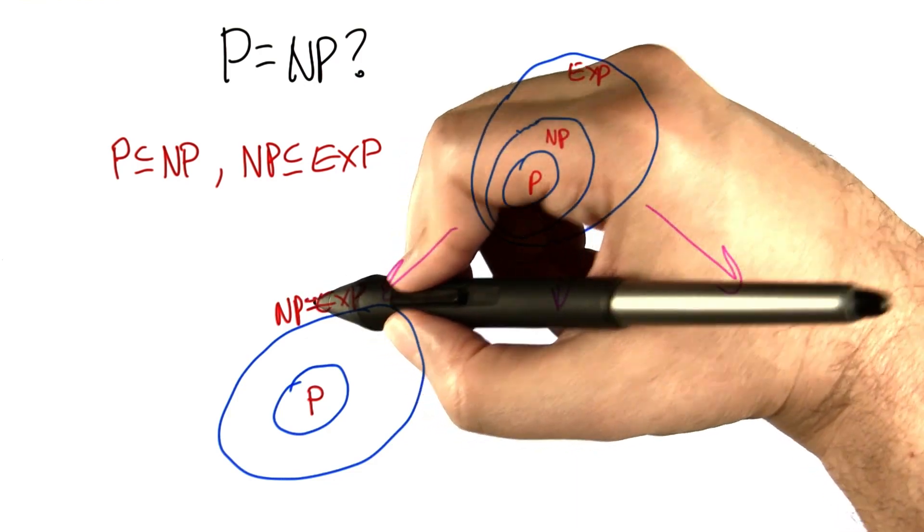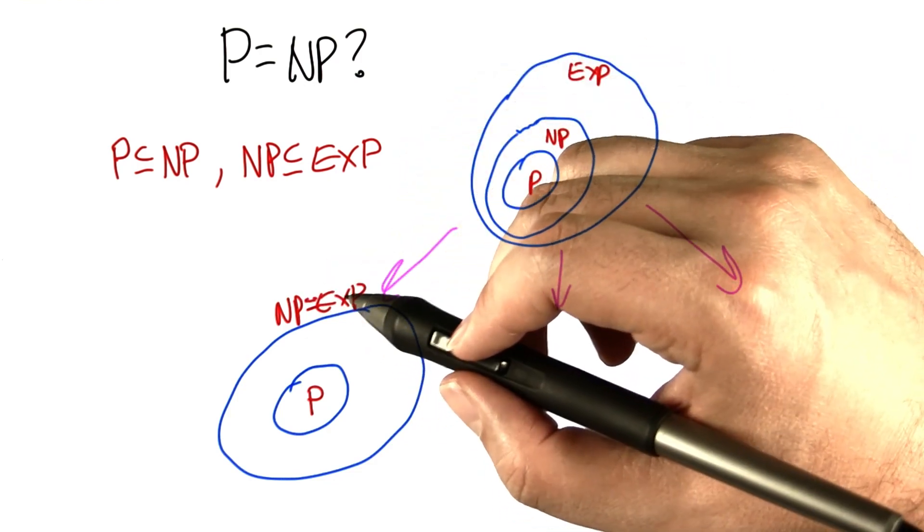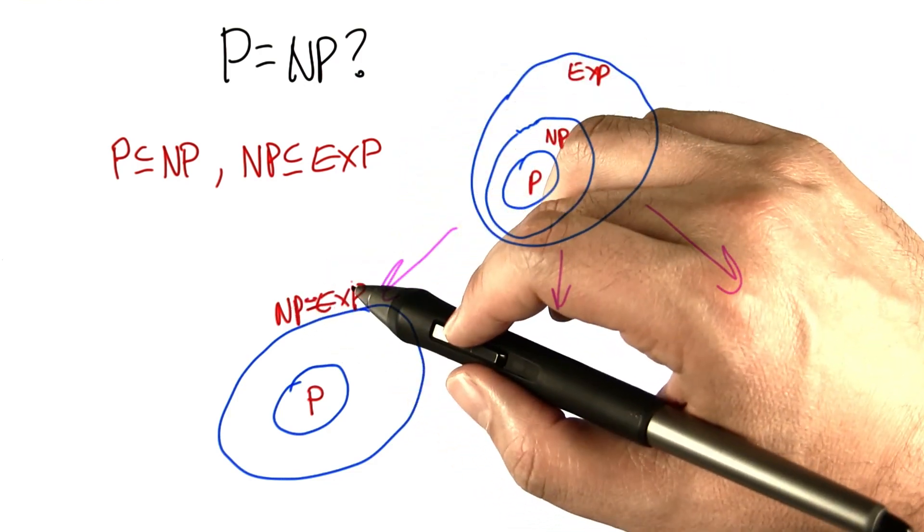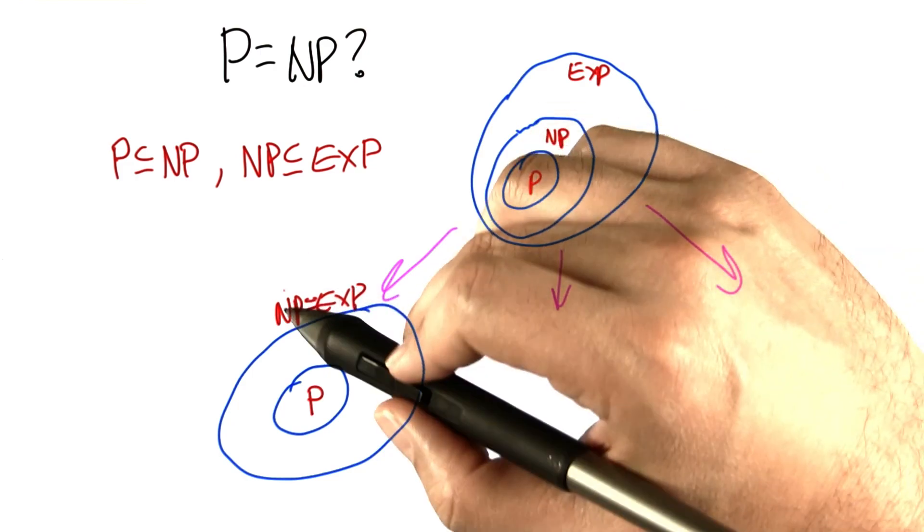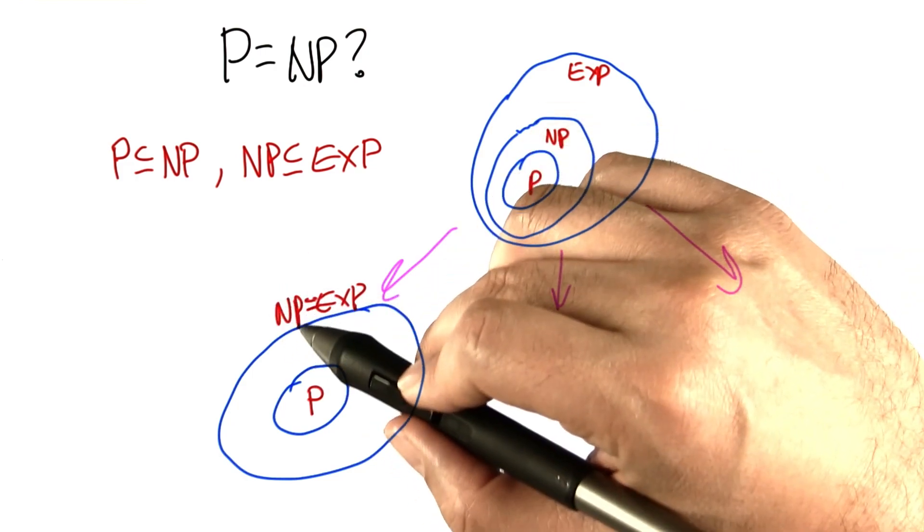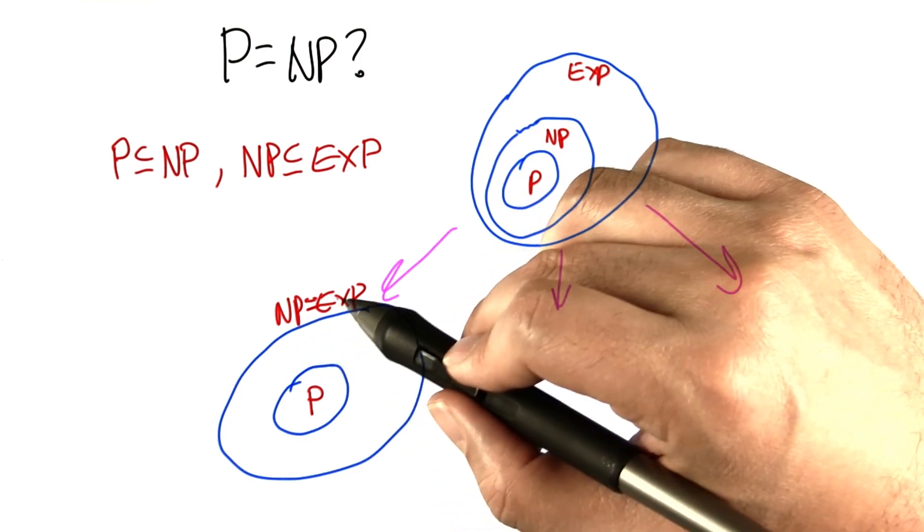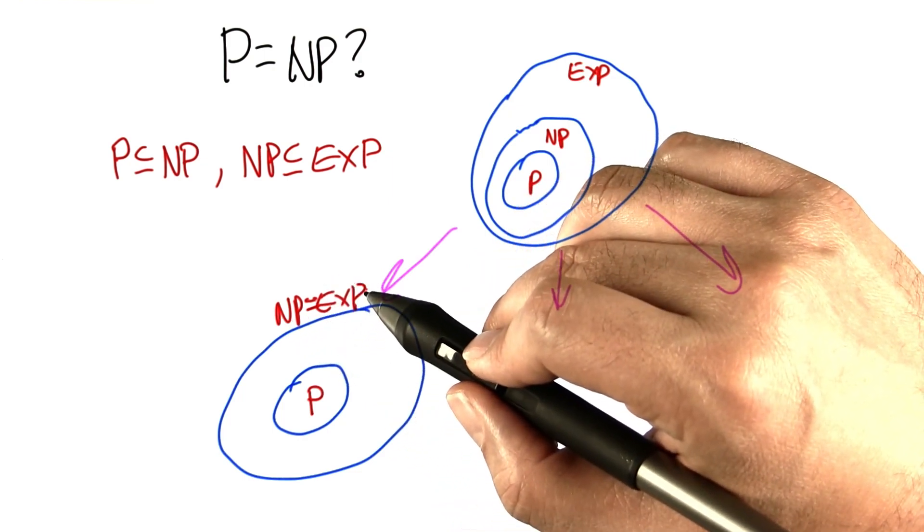But here's what we don't know. It could be the case that the class NP is actually equal to the class EXP. That is to say, the set of problems that we can solve in non-deterministic polynomial time might be exactly the same as the ones that we can solve in exponential time.